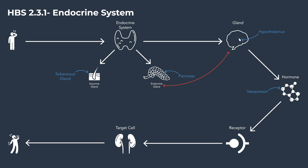Hi there, everyone. Mr. Burke here. I'm going to take a few minutes to talk to you about the HBS 2.3.1 activity and the portion of that activity where you create a flowchart about the endocrine system. Your work doesn't have to match my example, but your work should follow the directions and have all the required elements, just like mine does.